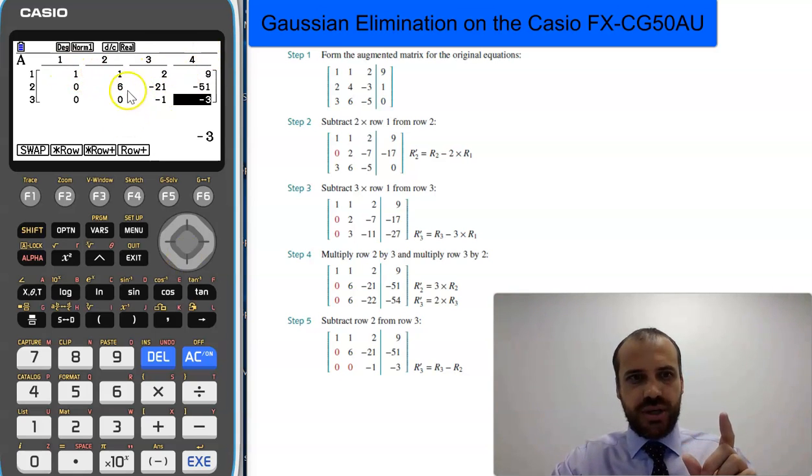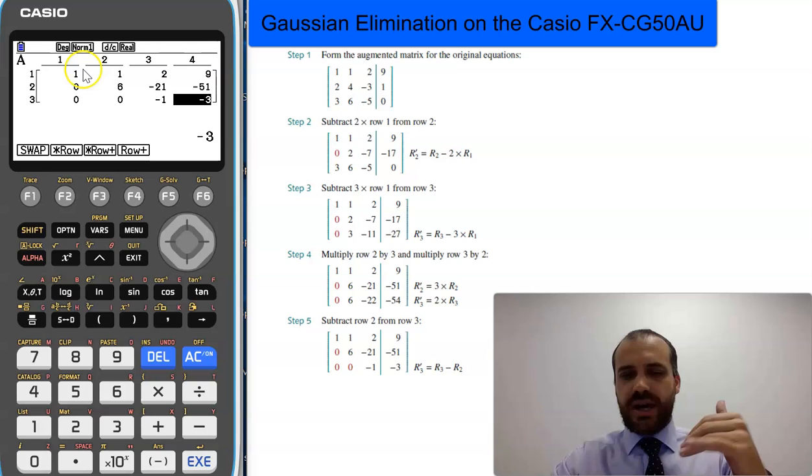1, 1, 2, 9, 6, negative 21, negative 51, negative 1, negative 3. And from there, we can work through that to figure out what x, y, and z are.